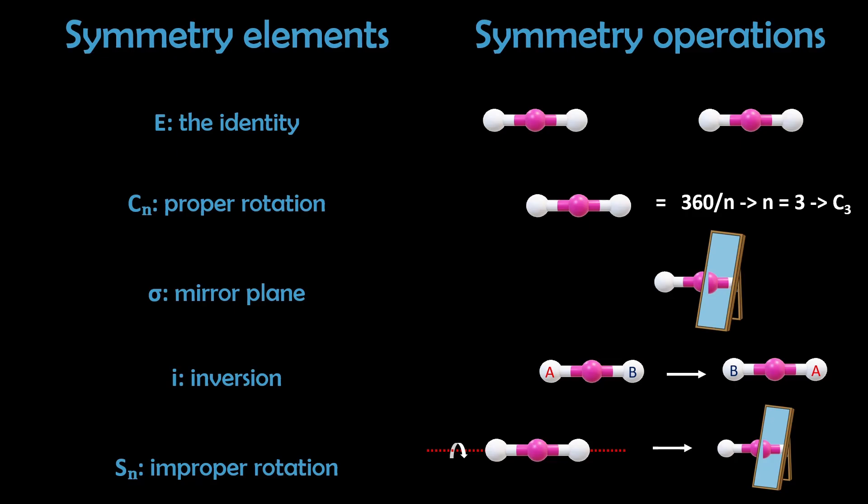So then each element has a corresponding operation. Identity leaves the molecule unchanged. Proper rotation rotates by 360 degrees divided by N about the axis. So for example, C3 is a 120 degree rotation because N equals 3.